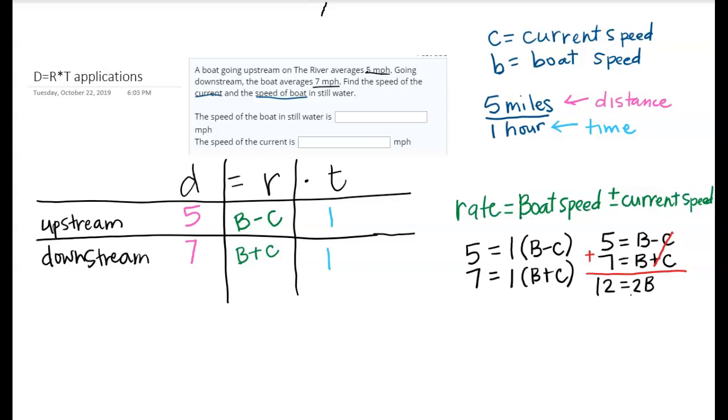To get B isolated, I'll divide by 2 on both sides. So I'll divide by 2 here and divide by 2 here. So I'll have 6 equals B. What this is saying is that my boat speed is 6 miles per hour.